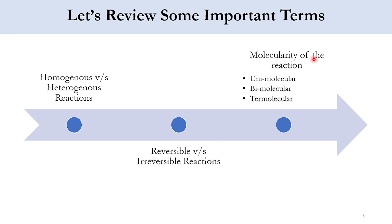Next is molecularity of the reaction — how many molecules are involved in the reaction. If only one molecule is involved, it's a unimolecular reaction. If two molecules are involved, it's bimolecular, and if three molecules are involved, it is termolecular. Examples include uranium decay as unimolecular, and NO producing NO₂ as a bimolecular reaction.